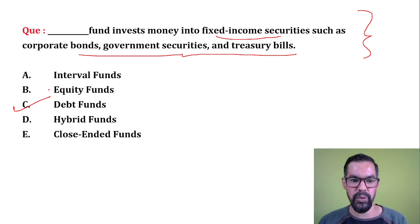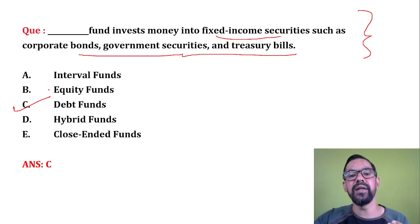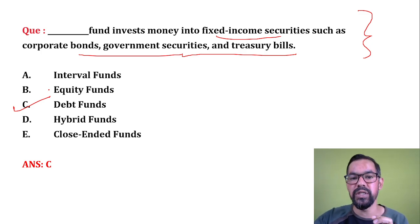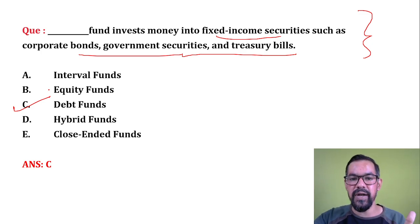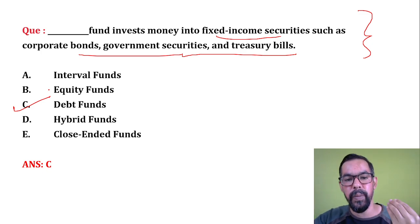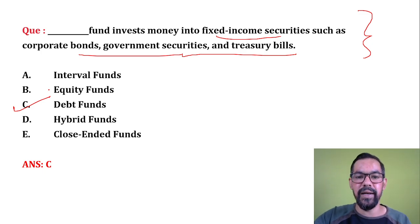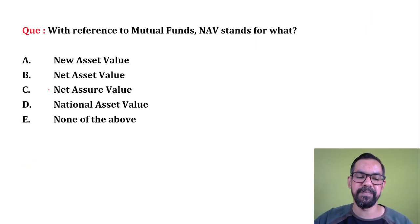In case of equity funds, they invest the entire money in equities. In case of debt funds, they invest entirely into bonds. Hybrid and interval funds make some combination of equity and debt — hybrid and interval are essentially the same. Close-ended has a fixed lock-in period, while open-ended allows investors to enter or exit anytime at the market NAV.